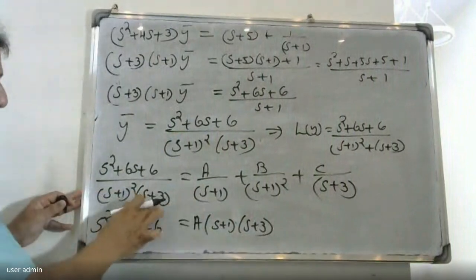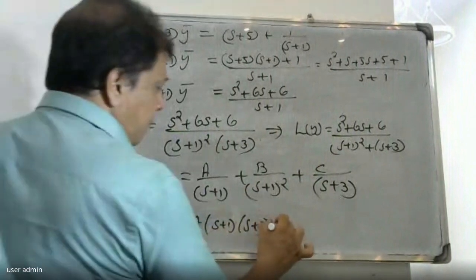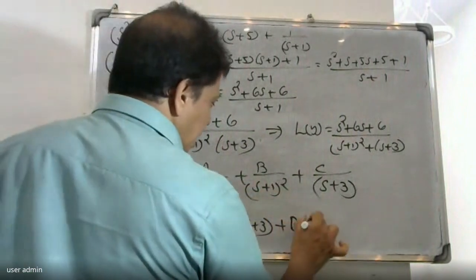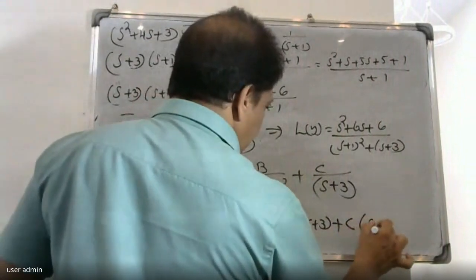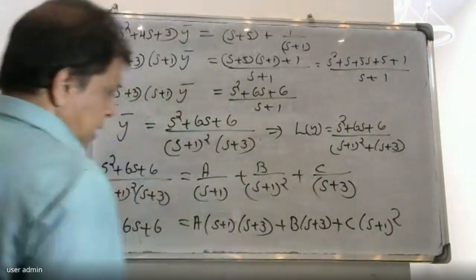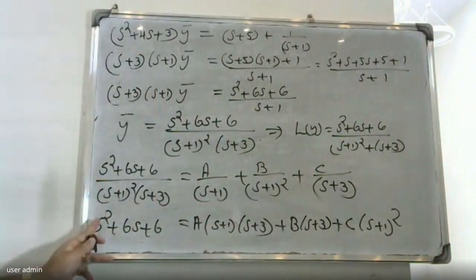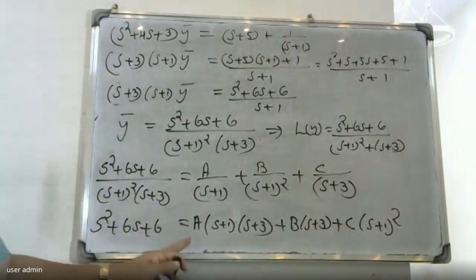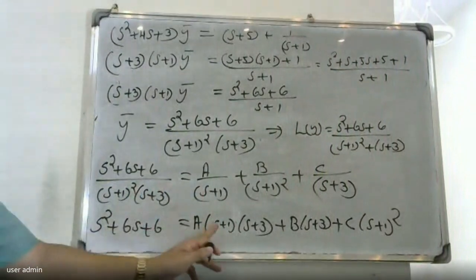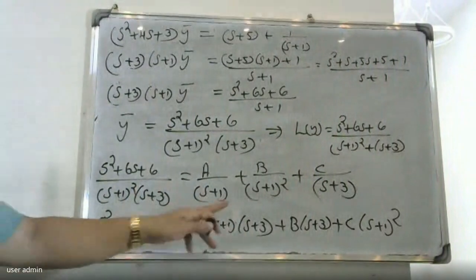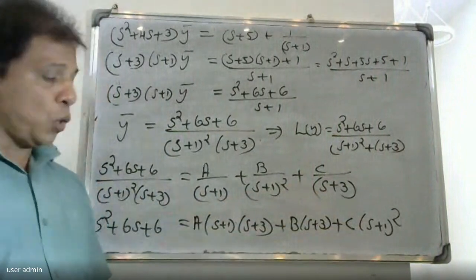Multiplying both sides by (s+1)²(s+3), the left-hand side is s² + 6s + 6, and the right-hand side is A(s+1)(s+3) + B(s+3) + C(s+1)².